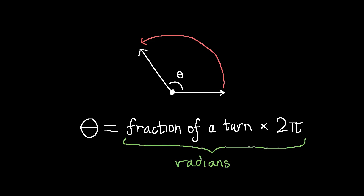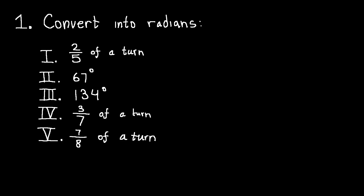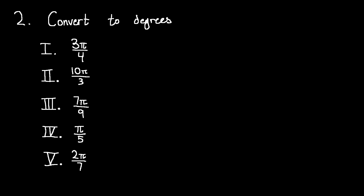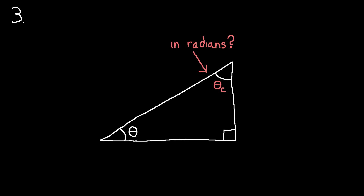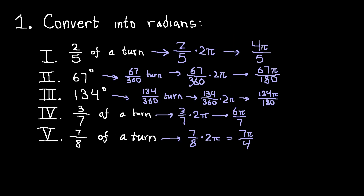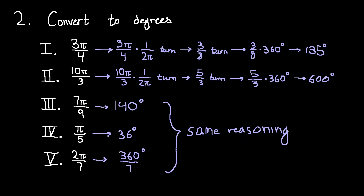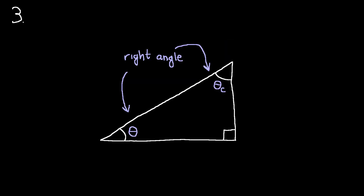This is the method we are going to use to measure angles. To get warmed up with using radians yourself, for exercise 1, convert these angles from turns or degrees into radians using the formula we worked out. For exercise 2, convert these angles from radians to degrees. For exercise 3, determine what the measure of an angle complementary to one with a length theta in radians is. Both of these angles must add up to a right angle, and a right angle is π/2. So if this angle has a measurement of theta, the other angle has a measure of π/2 minus theta.